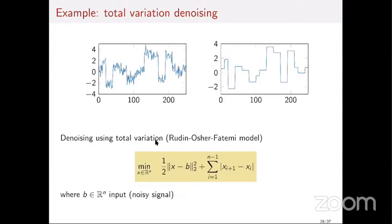On the left is a noisy signal, and on the right is the clear signal without the noise. The goal is how can I go from the noisy signal to the clear image. A very popular model that I already mentioned this morning is the so-called Rudin-Osher-Fatemi model, which is based on total variation.